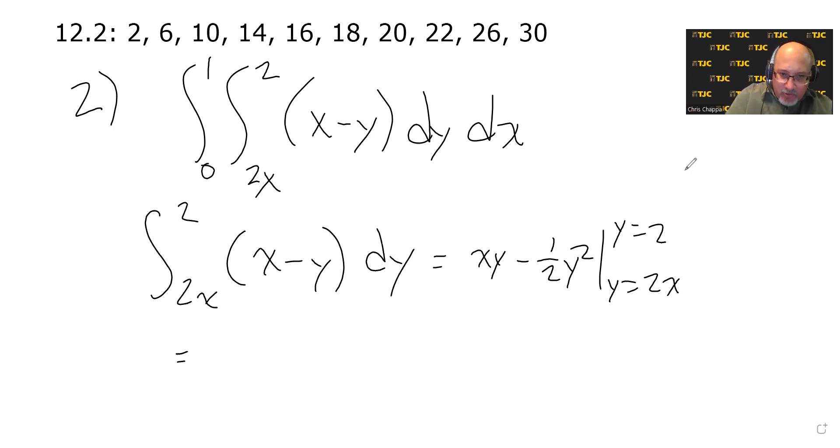So if we substitute the 2 for the y, we'll get 2x minus 1 half of 2 squared. 2 squared is 4, half of that is 2. So the antiderivative evaluated at y equals 2 simplifies to 2x minus 2.